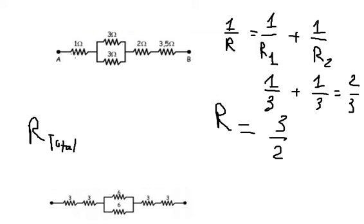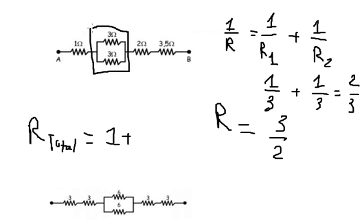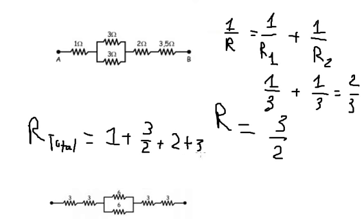Now we can find the total resistance. Because this is a series circuit, we sum everything together: 1 plus three over two plus 2 plus 3.5. We sum all the numbers together and we get 8 ohms. This is the answer for question number one.